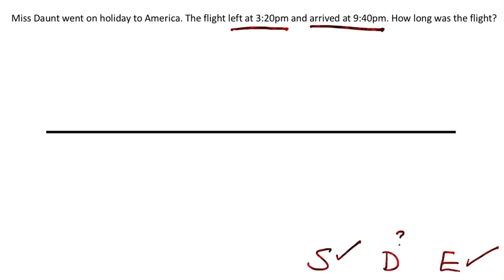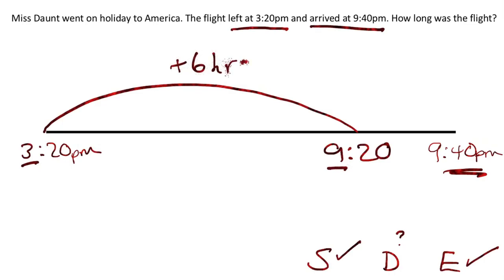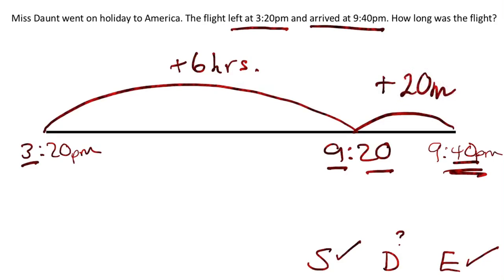Let's put those times onto the number line: 3.20pm and 9.40pm. Now we'll start by adding the hours — we need to add any full hours that we can. I can go all the way up to 9.20 here. I can't go to 10 because that's too far — I just have to go to the one before the final time. So from 3 to 9, I added 6 hours. Now the remaining minutes: from 20 to 40 is 20 minutes. So the answer — how long was the flight — is 6 hours 20 minutes.